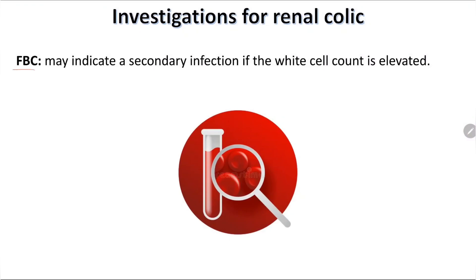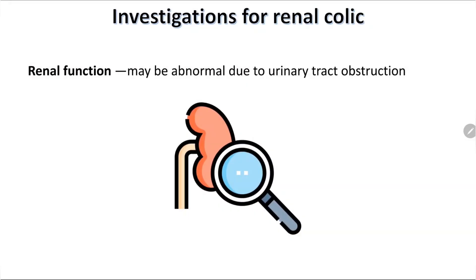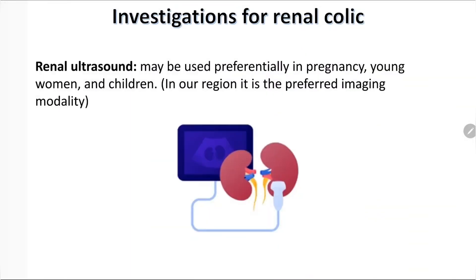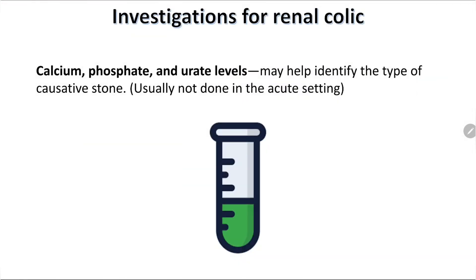A full blood count — if you see elevated white blood cells, you may see a secondary infection. Renal function tests might be disturbed in patients with bilateral urinary tract obstruction. Renal ultrasound may be used, especially in pregnancy, in young women, and in children; in our region this is the preferred imaging modality.